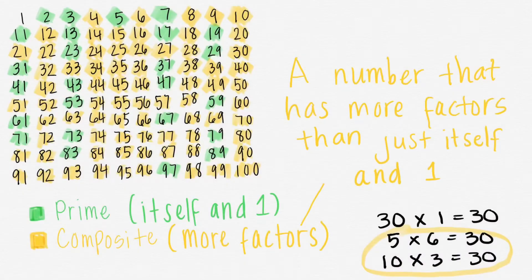On the other hand, a composite number is a number that has more factors than just itself and 1. For example, the number 30. You can do 30 times 1 equals 30, but you can also do 5 times 6 equals 30, and 10 times 3 equals 30.